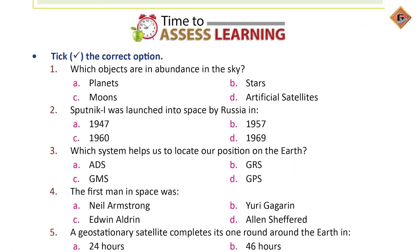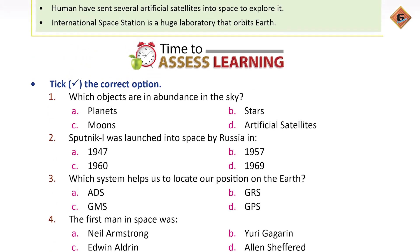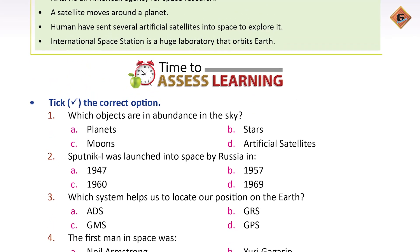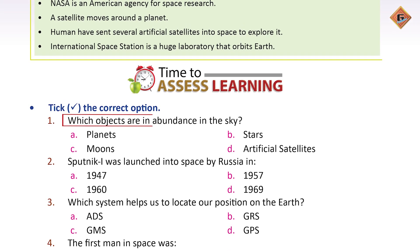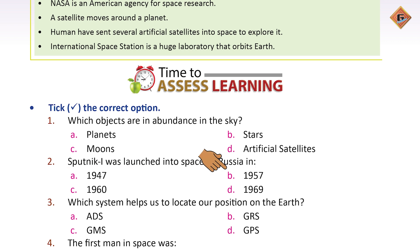Now we have to see page number 117. Tick the correct option. Which objects are in abundance in the sky? Stars — in the sky there are a lot of stars, so this is the correct option. Sputnik 1 was launched into space by Russia in 1957.